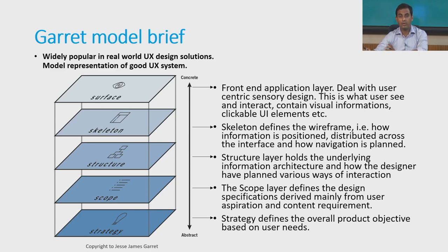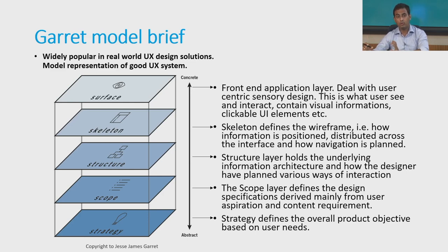This is where things get a little bit technical and are abstract from the user perspective in the actual implementation of the system. Under the skeleton layer, we have the structure layer. The structure layer holds the underlying information architecture and how the designer has planned various interactions. The structure layer is the basis on which the skeleton layer gets developed, and on top of the skeleton layer, the surface layer gets developed. These top three layers are mostly the work of a designer as part of a user-centric design process.